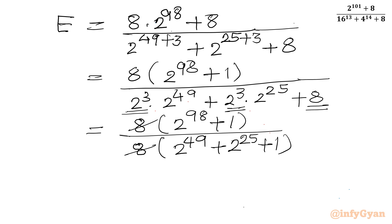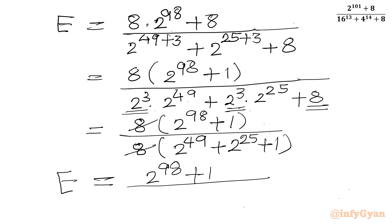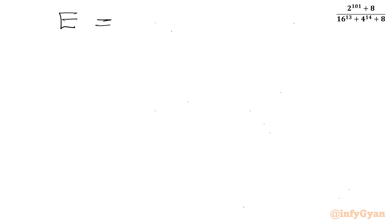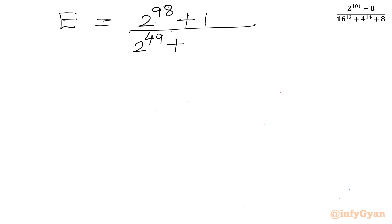The 8s cancel out from numerator and denominator. So the expression E simplifies to 2 power 98 plus 1, divided by 2 power 49 plus 2 power 25 plus 1.